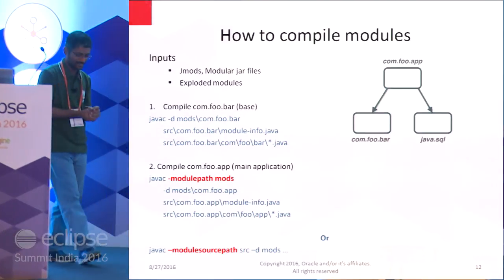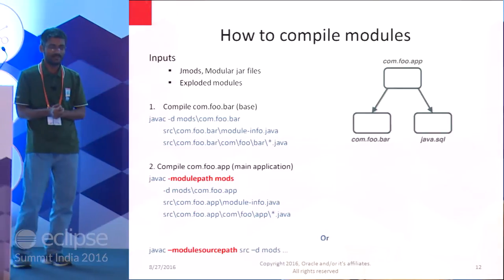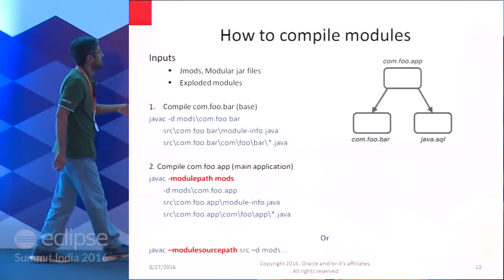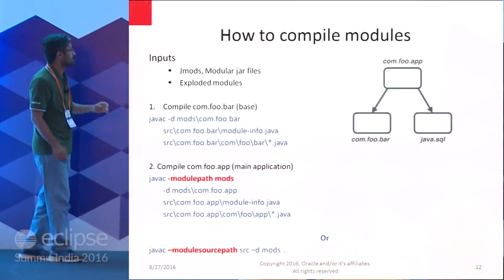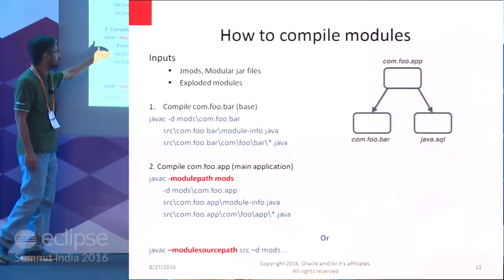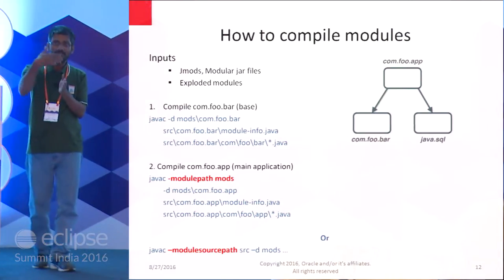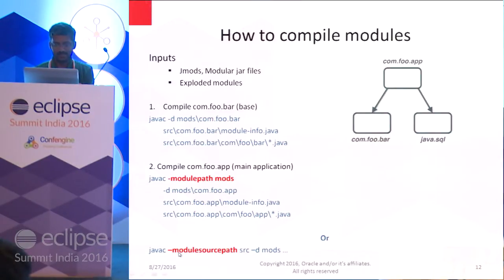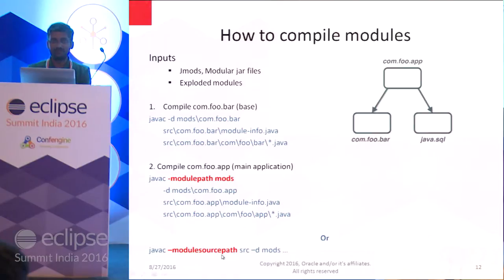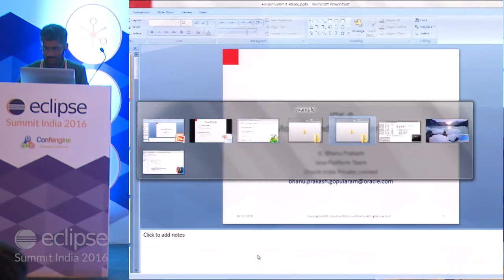Compiling modules was covered in an earlier session. It's like normal Java compilation, except you pass the module-info.java file as part of the javac command. When compiling the main module, you must mention the module-path option, indicating where dependent modules can be found. There is also a 'module-source-path' option that lets you compile multiple modules in a single command.